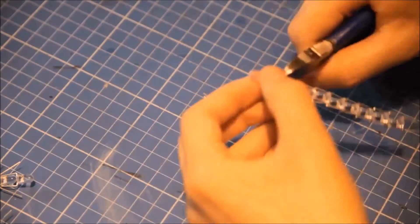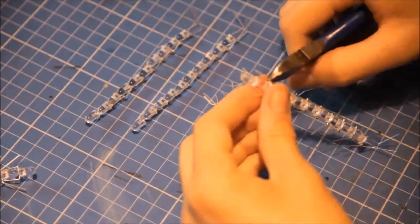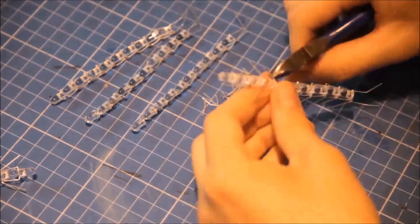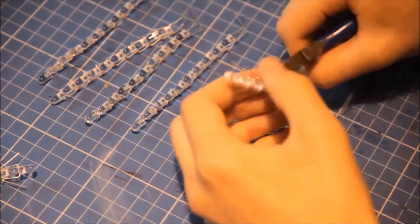So trim off the excess legs of the LEDs except the ones at the bottom of each of the 10 strings and then connect all the 10 strings together and solder them all together as well.